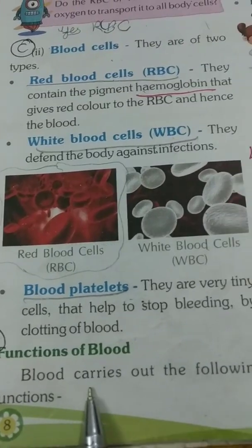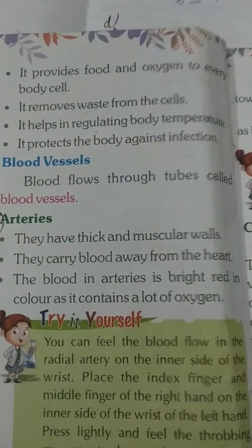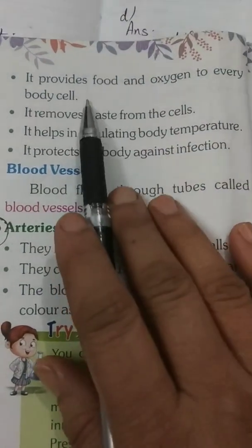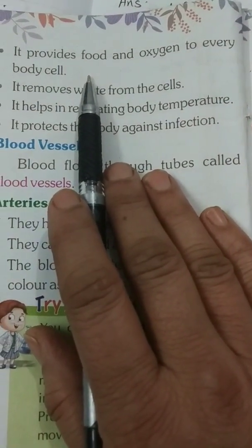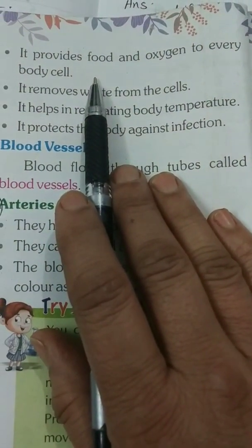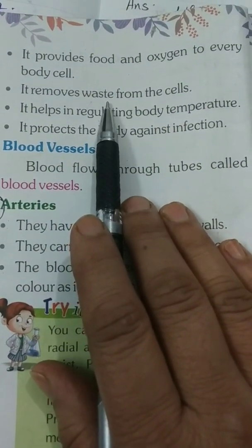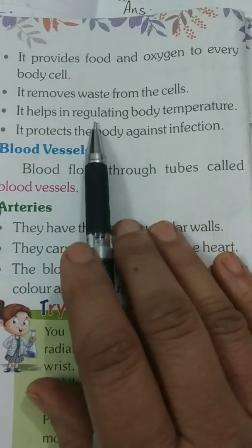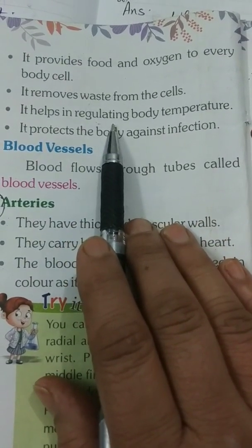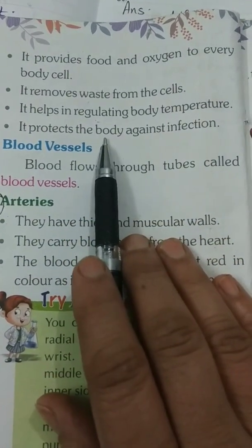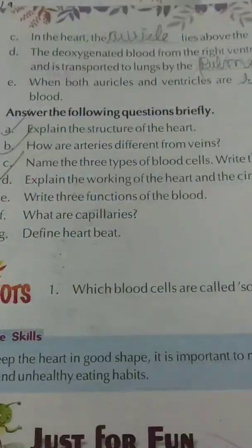Blood carries out the following functions. It provides food and oxygen to every body cell. It removes waste from the cells. It helps in regulating body temperature and protects the body against infection.